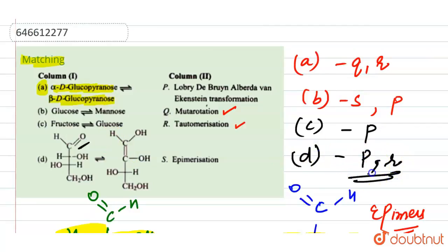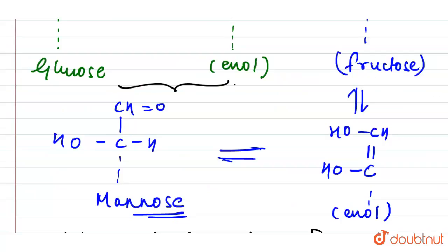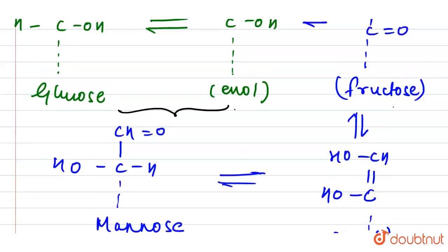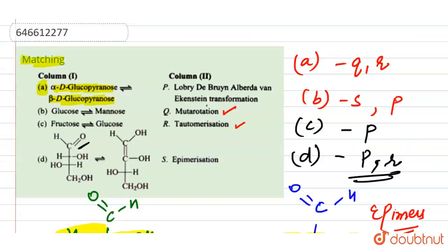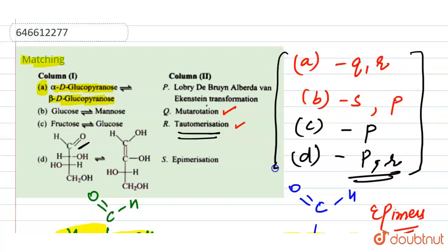For option D, we can see there is an aldehyde group converting to a keto group, representing tautomerization through the Lobry de Bruyn reaction via 1,2-enolization. Here we have the keto-to-enol conversion — fructose is the keto form — but this is the conversion from fructose to mannose via tautomerization, not to glucose. So for D the answer is P and R.